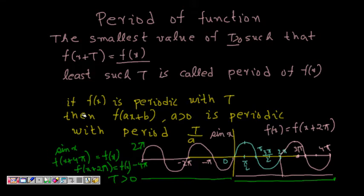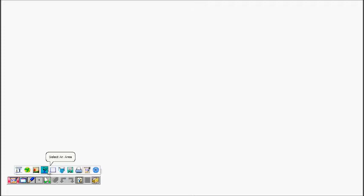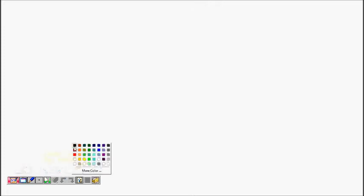One more property you should know: if f(x) is periodic with period T > 0, then f(ax + b) where a > 0 is also periodic and its period is T divided by a. These are the things to remember, and now we will look at some examples.